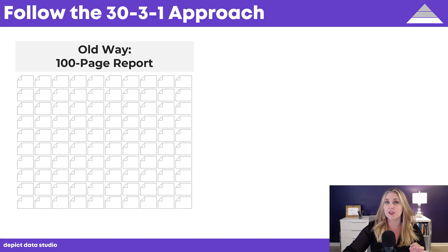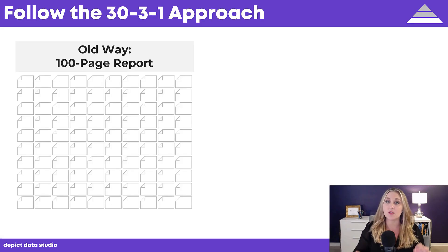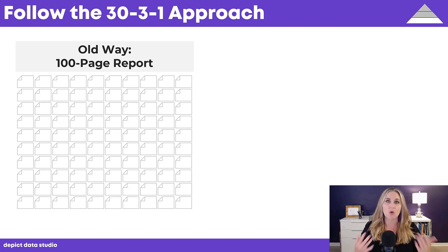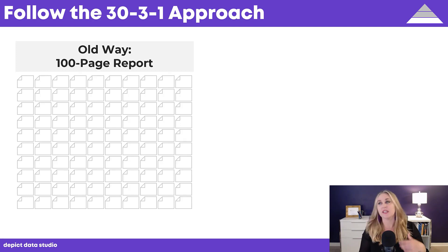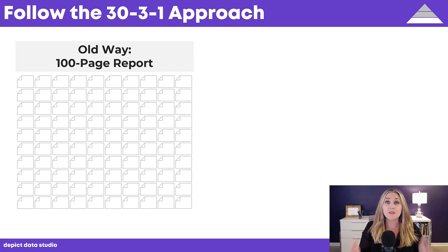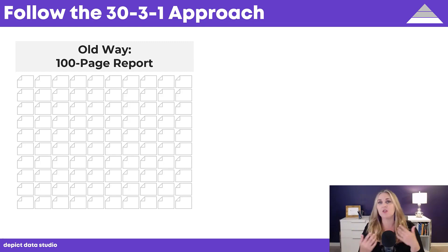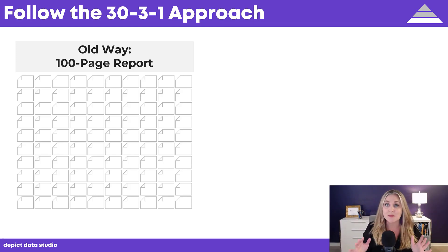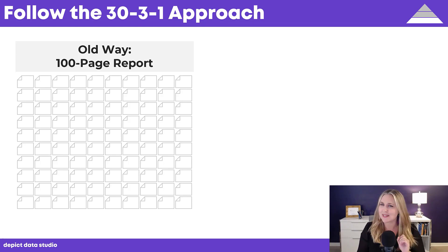I want to talk to you about the 3-3-1 approach to reporting. So this is the old way — the hundred-page report, the end-of-program report, the technical report. These get really long. If you work in program evaluation or applied research like I do, you're familiar with these. These used to be the norm, not that long ago. And in some settings — I'm thinking of government contracting —